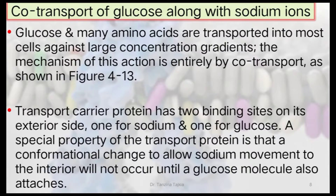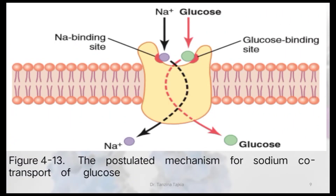Glucose and many amino acids are transported into most cells against their large concentration gradient entirely by co-transport. For co-transport of glucose with sodium ion, the transport protein has two binding sites on its exterior side: one for sodium and one for glucose. A special property of the transport protein is that a conformational change to allow sodium movement to the interior will not occur until the glucose molecule is also attached.